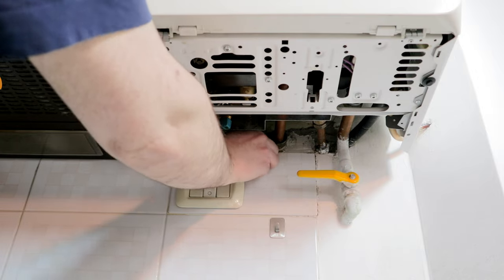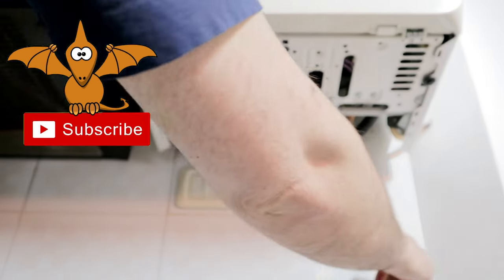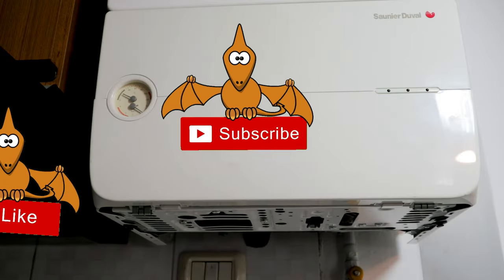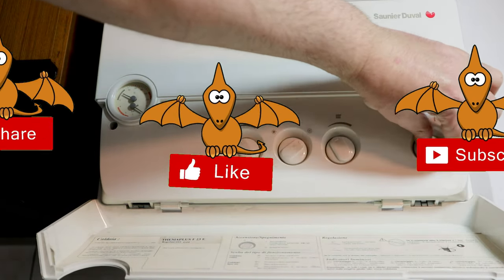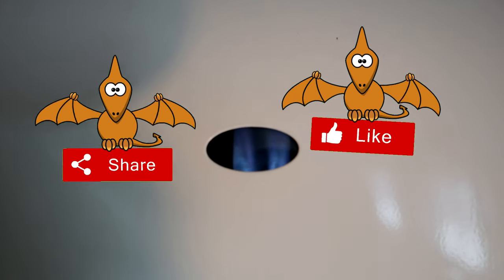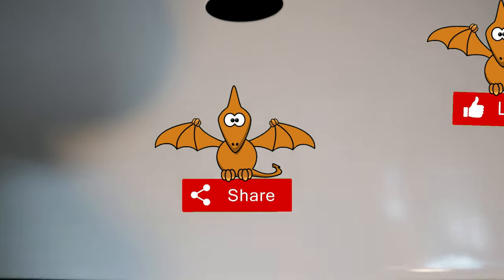I reattach the inspection door. I open the water and gas valves, turn the power back on and turn on the boiler. The boiler is back to working perfectly and without any water loss.